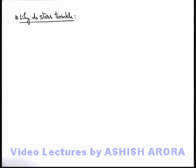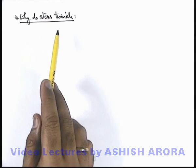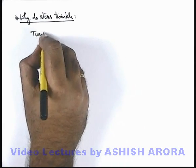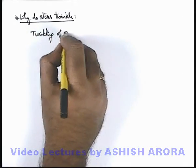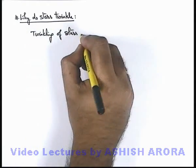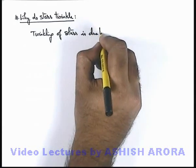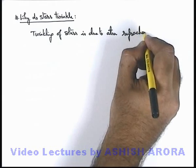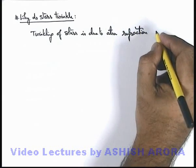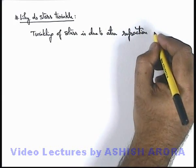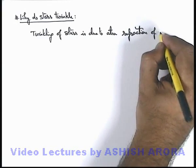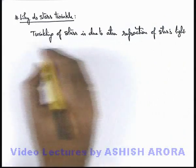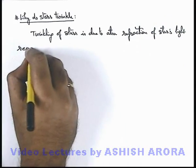Let us now study about why do stars twinkle. Here we can write that twinkling of stars is due to atmospheric refraction. This we have studied in the previous section also — it is due to the atmospheric refraction of starlight which is reaching on Earth.